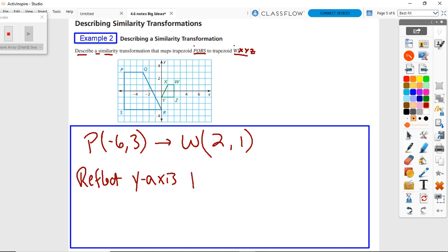That would take P to instead of being negative six, three, that would take it to six, three. And then how could I get from six, three to two, one? Well, just divide by 3, so first thing if I reflect and then dividing by 3 is the same as a dilation with a scale factor of one third.